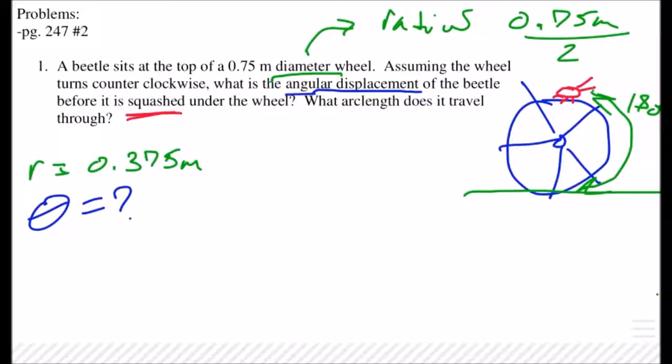And then arc length. What did we say represents arc length, what variable? S, very good. So arc length is s and that's that linear distance around the circle that this beetle is going to have to travel to get squashed.